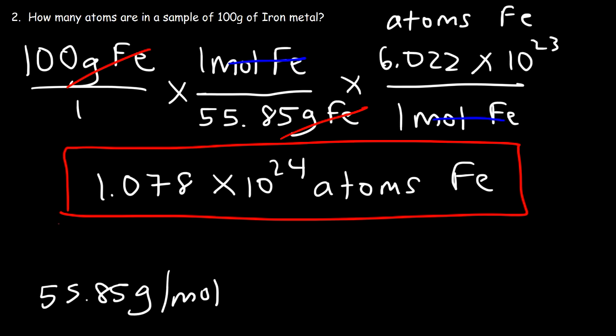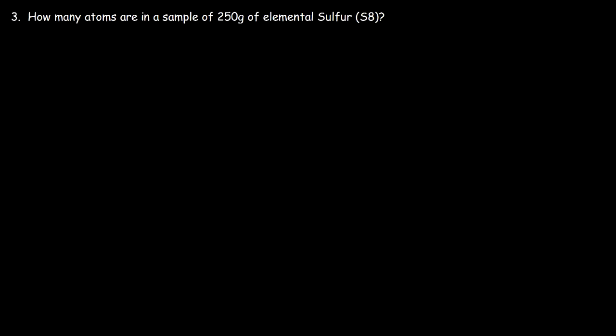Now you know how to convert grams to atoms. But sometimes you might encounter problems that are much harder. I'm going to give you some examples of problems that progressively get harder. Number three: how many atoms are in a sample of 250 grams of elemental sulfur, S8? This problem is very similar to the last one, but with one additional step. See if you can figure it out. Let's start with 250 grams of sulfur S8.